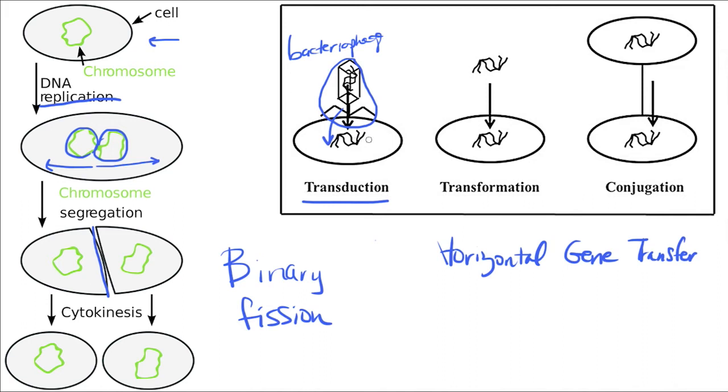The process of transformation just means that a bacteria or prokaryotic cell is actually taking up DNA from its environment. So from the media that it's growing in, it can actually take up foreign pieces of DNA.